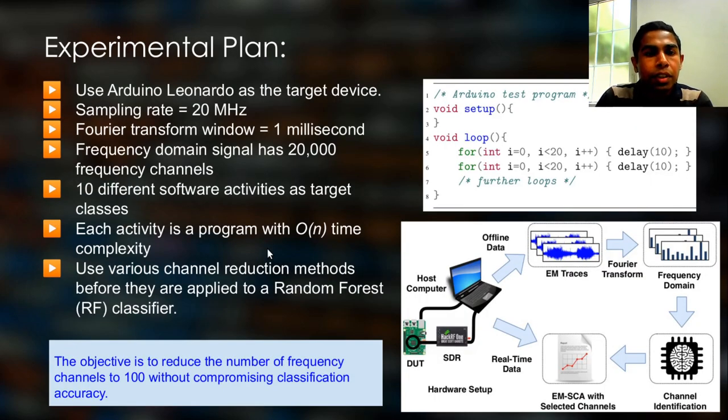So this is our experimental plan. We use Arduino Leonardo as the target device. And we sample data at the rate of 20 megahertz using a software defined radio hardware. And we set the short term Fourier transform window to one millisecond in order to convert time domain signals into frequency domain. And we use 10 different software activities running on the target device as the classes we need to identify using a random forest classifier.